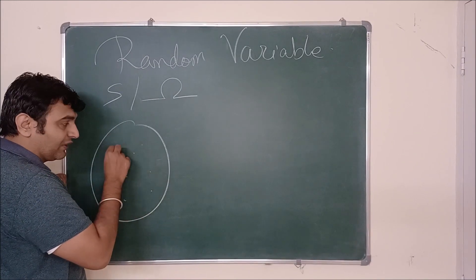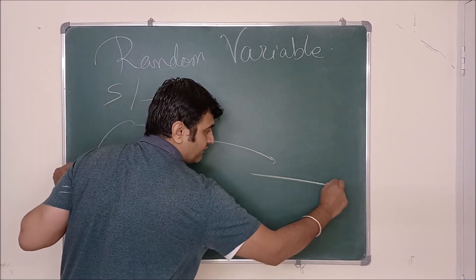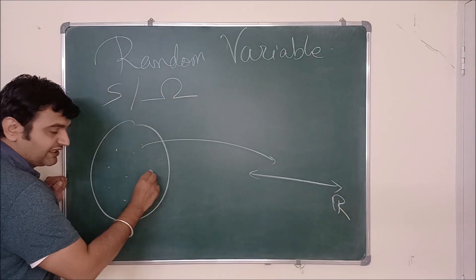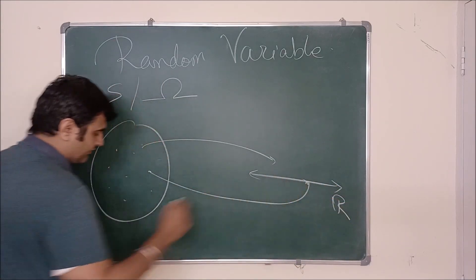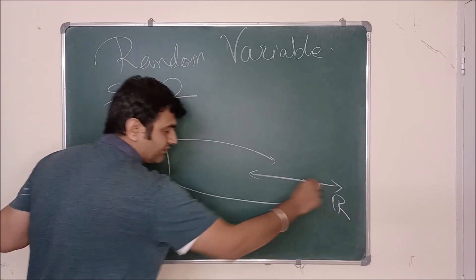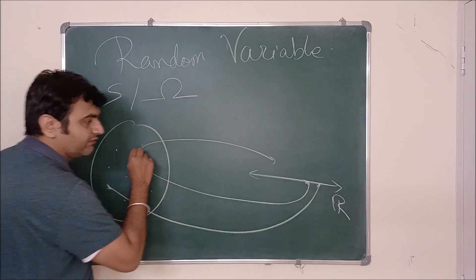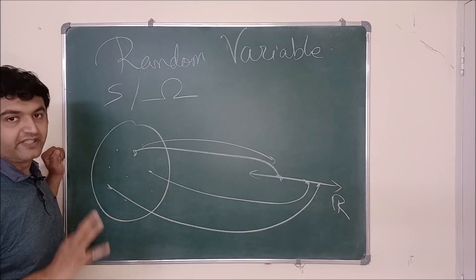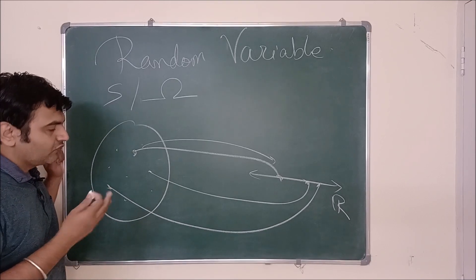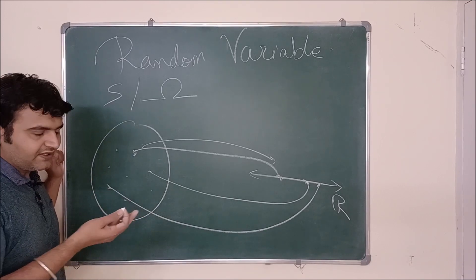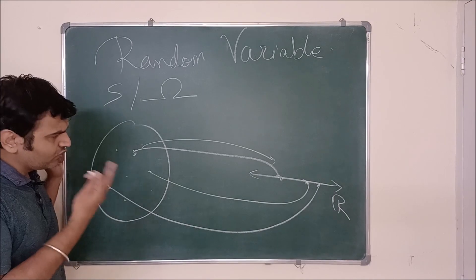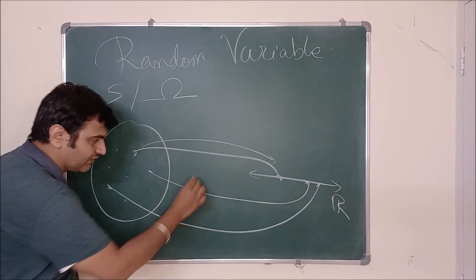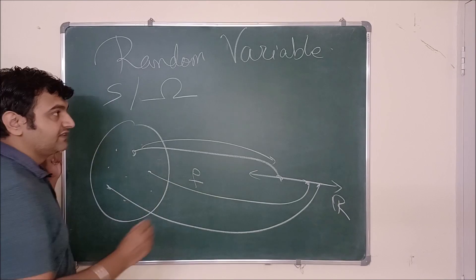Now what we do is assign a number to each possible outcome — this is my real number line. To each possible outcome you assign a number, and that's what a random variable is. If you have studied calculus, you will say 'oh, a random variable is nothing but a function' — and yes, you are right, it's a function.